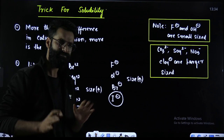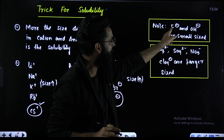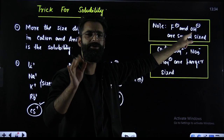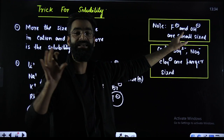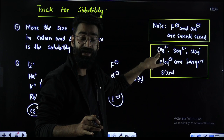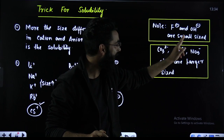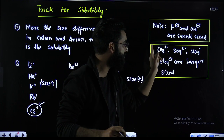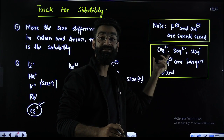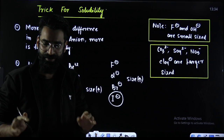Two more things and we are done. F⁻ and OH⁻ are considered to be smaller sized anions. Remember it. CO₃²⁻, SO₄²⁻, NO₃⁻, ClO₄⁻ — these are considered to be larger sized anions.